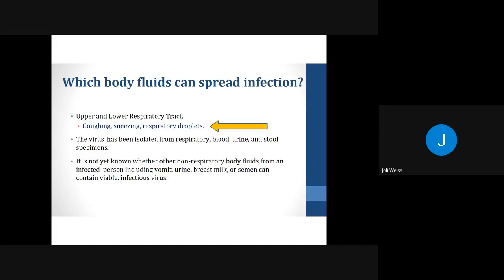So what body fluids can spread infection? Mainly, it will be those from your upper and lower respiratory tract — through coughing, sneezing, and respiratory droplets. The virus has been isolated from respiratory, blood, urine, and stool specimens. It is not yet known whether other non-respiratory body fluids from an infected person, including vomit, urine, breast milk, or semen, can contain viable infectious virus.